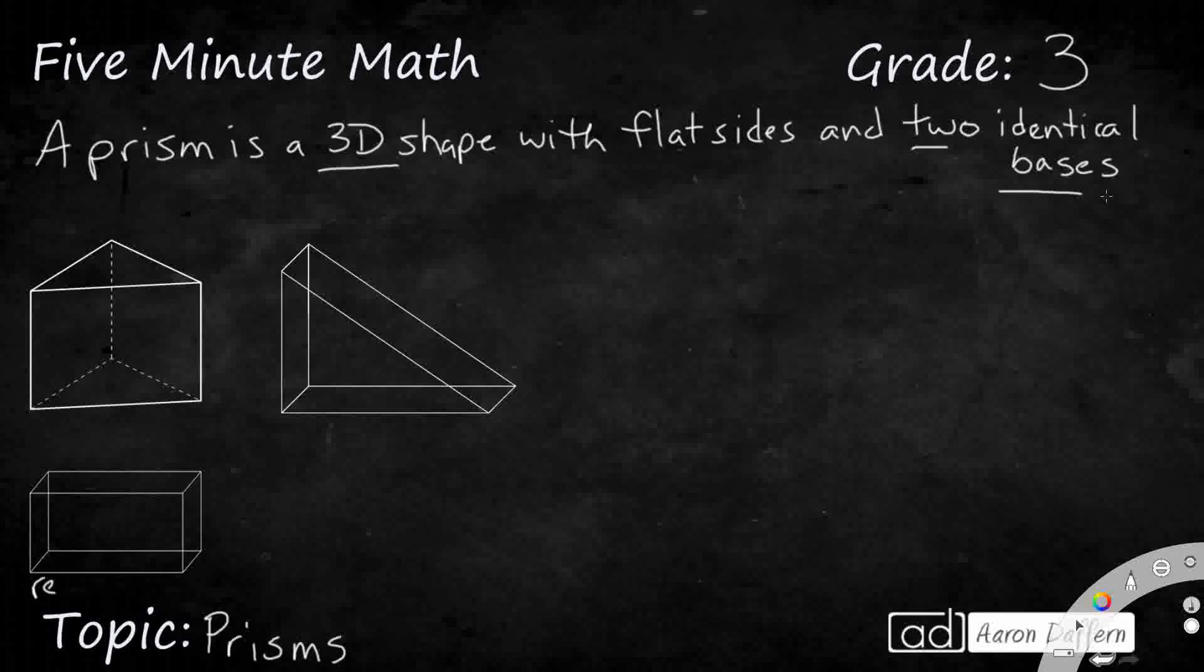Now this first one on the bottom is a rectangular prism. So it's a three-dimensional shape and it has two identical bases. And you can actually look at the identical bases in many ways. So you can have this front rectangle right here. It's the same as this back rectangle.